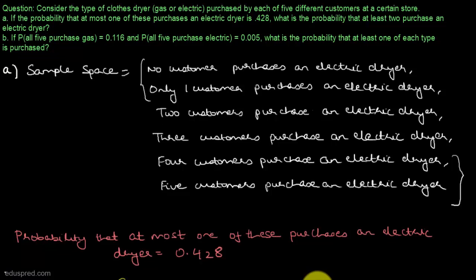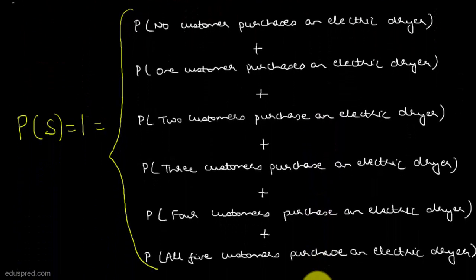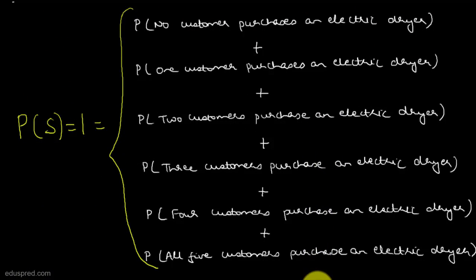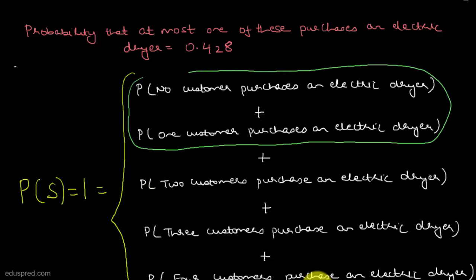The first event is that no customer purchases an electric dryer. The second event is that only one customer purchases an electric dryer, and so on. Within these events, you will have many outcomes. Because this is the sample space, we know that the probability of the sample space is equal to one, so the sum of all these events' probabilities is equal to one. We are given that the probability that at most one purchases an electric dryer is 0.428, meaning the sum of these two probabilities is 0.428.